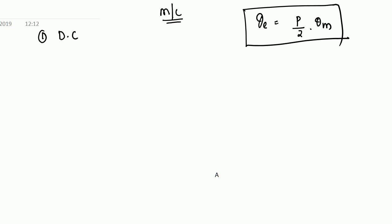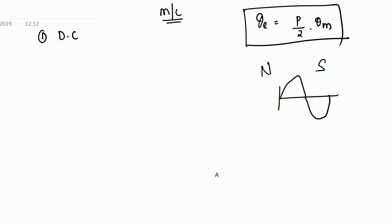For example, there are two poles — north pole and south pole. North pole is positive and south pole is negative.